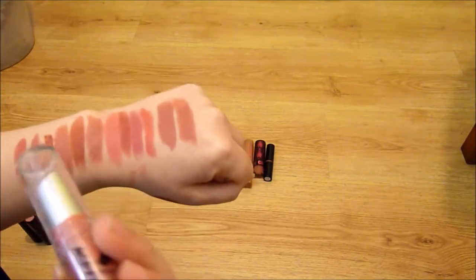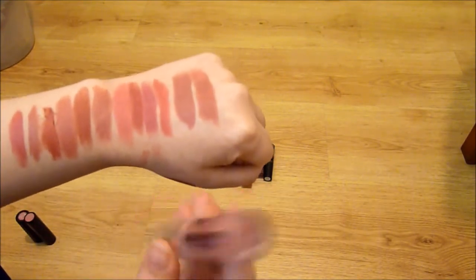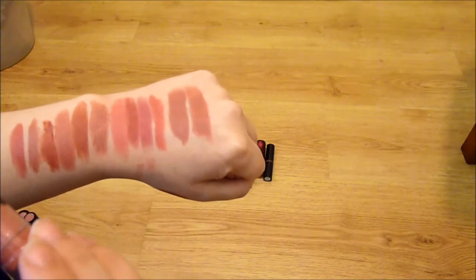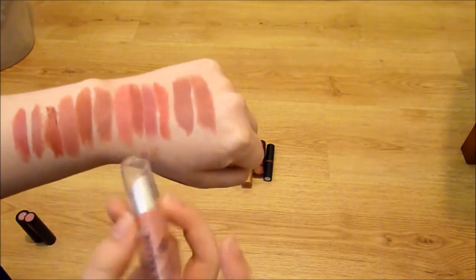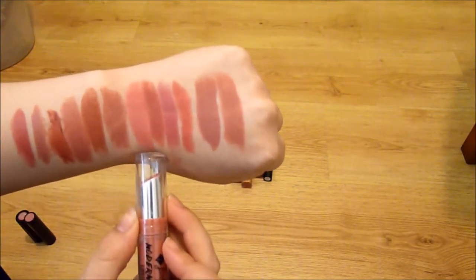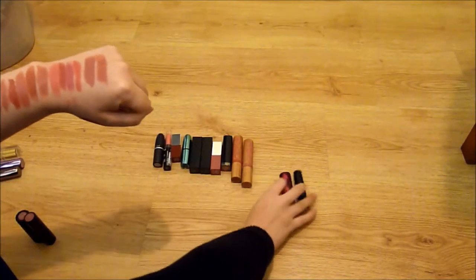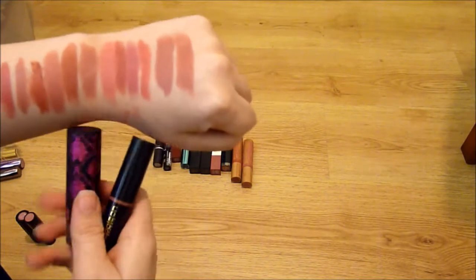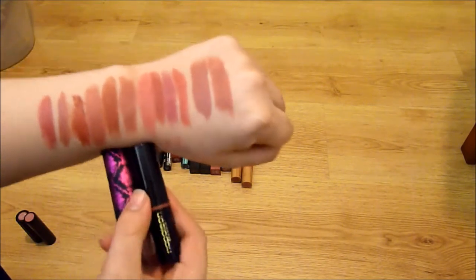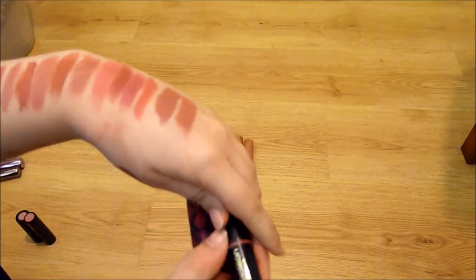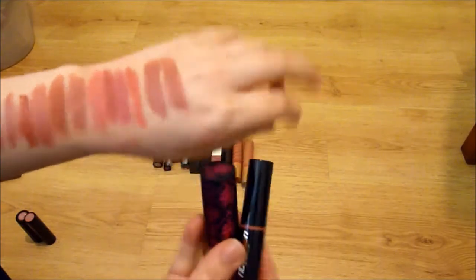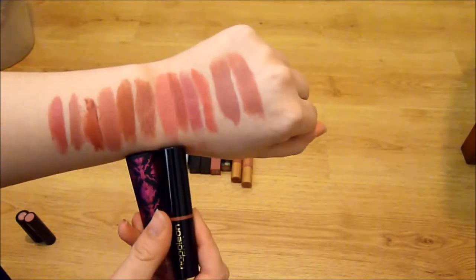This is the Jordana Modern Matte Lipstick in Matte Tease. That's this one here. I'm also going to pass that one along. I'm keeping these two here, which look the exact same. This is Napoleon Perdis Grace and Chi Chi Modern Minimalist. They're both mattes and they're both beautiful.